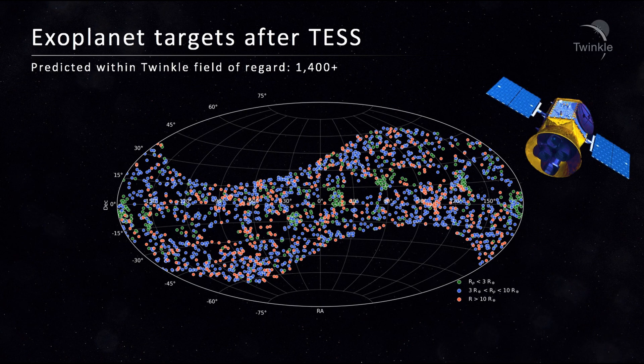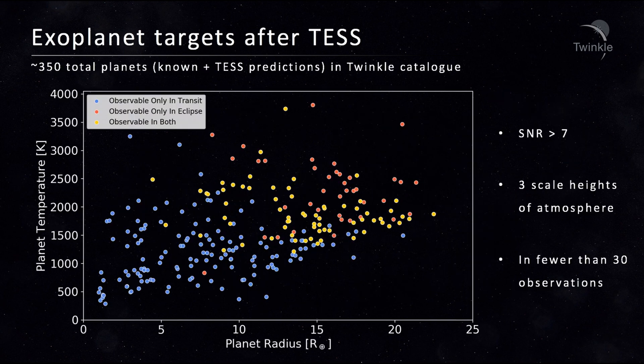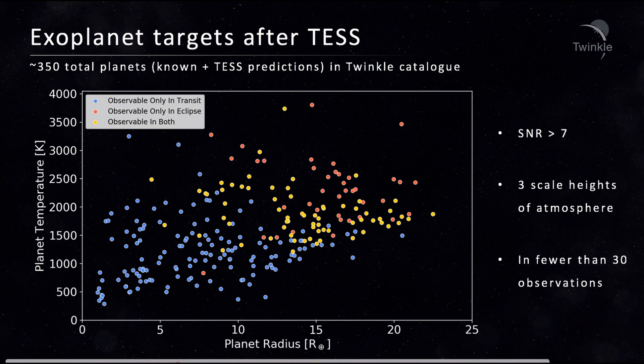Surveys such as TESS are predicted to discover hundreds of additional planets within Twinkle's field of regard. Not all of these planets, and those that we know of today, will be suitable for atmospheric characterization. Therefore, we have simulated Twinkle's performance for each of these planets to understand which ones we could feasibly observe, by setting requirements on the desired data quality. We find that, when the mission launches, there will be hundreds of potential targets for Twinkle, diverse in terms of their size and temperature.